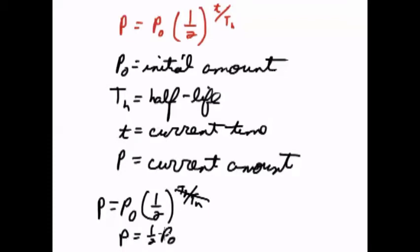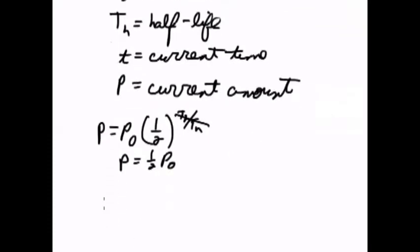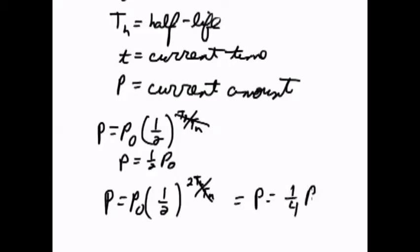We will have one-half of the starting amount. If I have two half-lives, I'll have p equals p sub not times one-half times two t sub h over t sub h. Those cancel out, and we'll have p equals one-fourth p sub not, so the amount left is halved again.